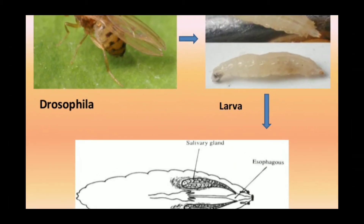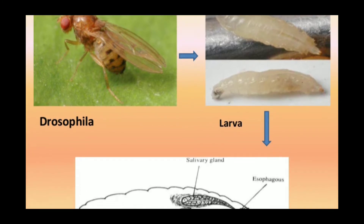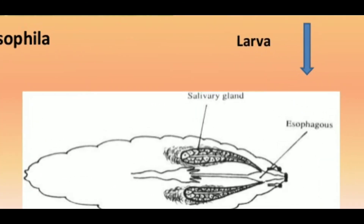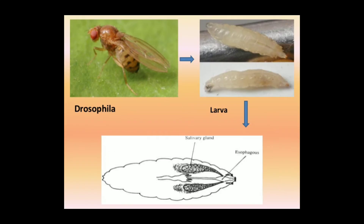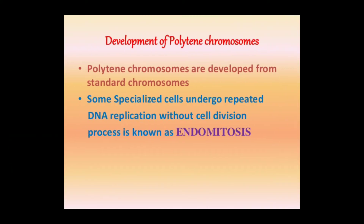Polytene chromosomes are found in the salivary gland of Drosophila larvae. Development of polytene chromosomes: polytene chromosomes are developed from standard chromosomes. Some specialized cells undergo repeated DNA replication.